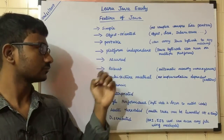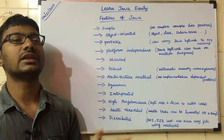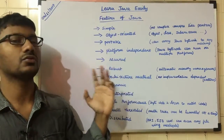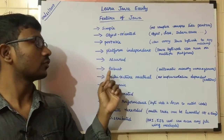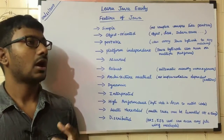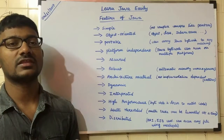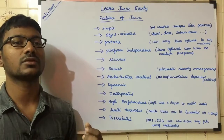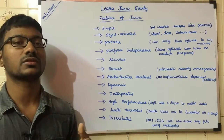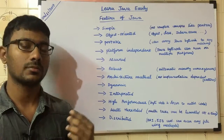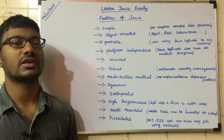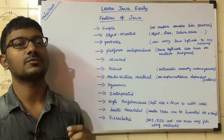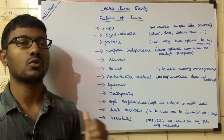Secured — detail will be in the next video. Next is robust. For example, if you are using C/C++, you have to manage memory manually. But in Java, there is automatic memory management. That is what makes Java robust.